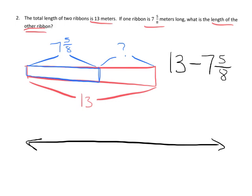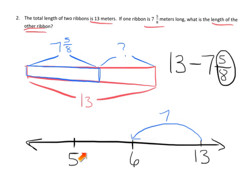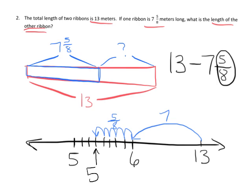I'll do this the Engage New York way first. Starting at 13, I go backwards 7, which puts me at 6. Now I need to go backwards 5-eighths. Here's my one-whole interval — I'll cut it into eighths, and go backwards 5-eighths: one, two, three, four, five. So in total I went backwards 7 and 5-eighths, and that puts me at 5 and 3-eighths. That's our answer.